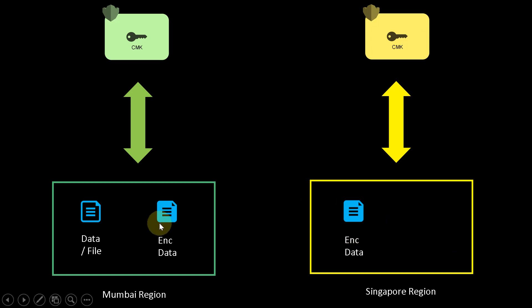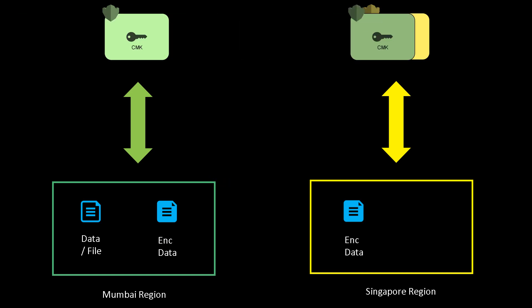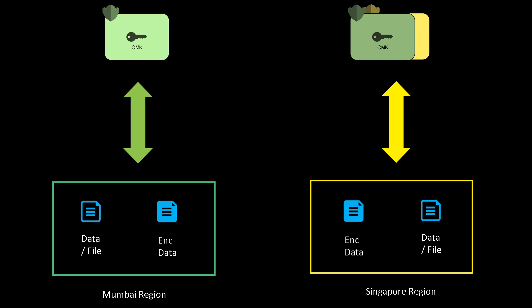With KMS multi-region keys, that is now possible. You can move data encrypted in one region to another region using something called multi-region keys, which basically creates a key replica in the target region. Using the same key ID, you can move the encrypted data from Mumbai region to Singapore region and then use the same key ID to decrypt the data into its plain text form.